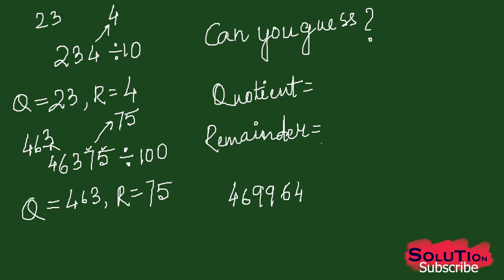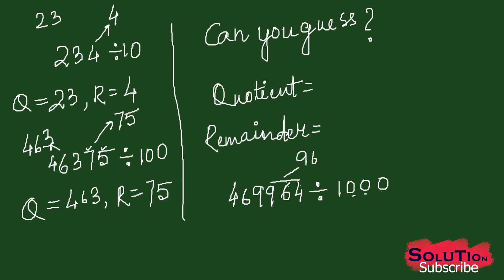Can you guess what will be the answer of this? If you see here, you will get one pattern. Because there are three zeros, from the right side I have to take three digits. So 964, I will write separately, and the remaining three digits I will write separately as 469. So 469 is my quotient and 964 is my remainder.